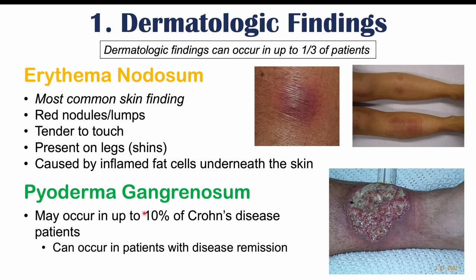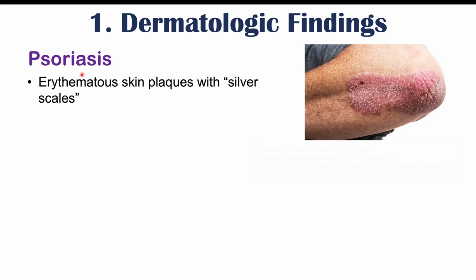Another skin condition associated with Crohn's disease is psoriasis — erythematous skin plaques with silver scales. Erythematous means reddened, and a plaque is a raised skin lesion greater than one centimeter in diameter. Psoriasis is associated with inflammatory bowel disease broadly, so this can include both Crohn's disease and ulcerative colitis.